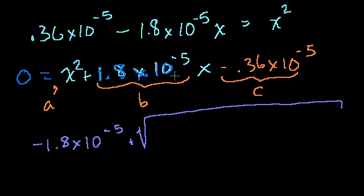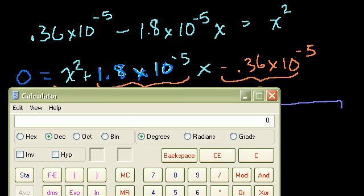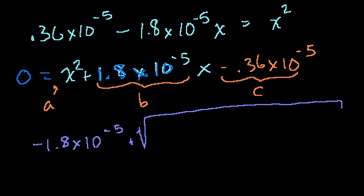We'll do a lot of math here. b squared. So it's 1.8 times 10 to the negative 5. So it's 1.8. If you square it, it's 3.24. So it's 3.24 times. If you square 10 to the minus 5, that's 10 to the minus 10.